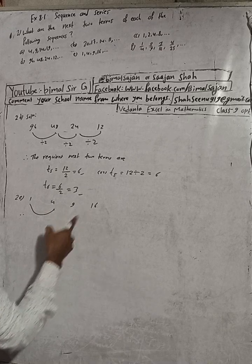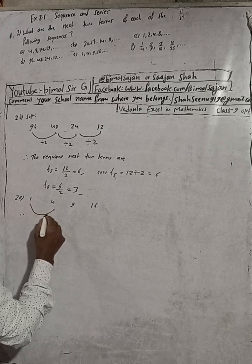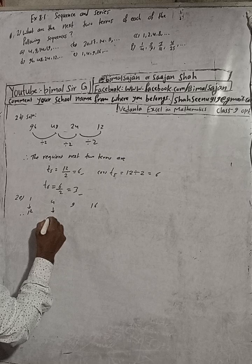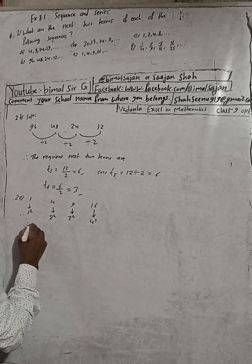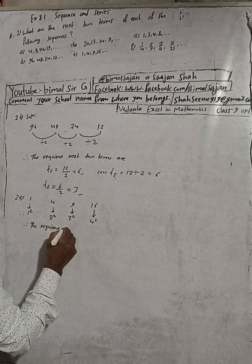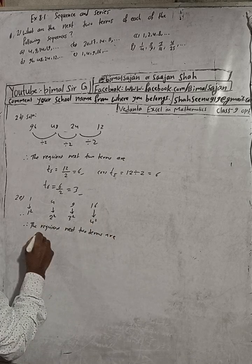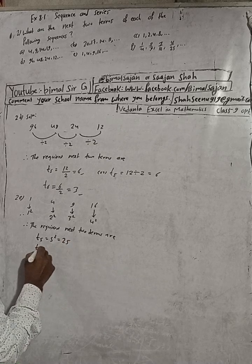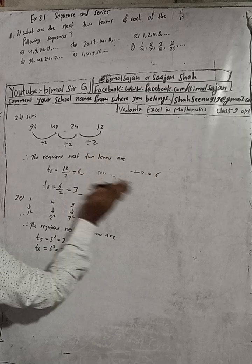Now part (e). The sequence is 1, 4, 9, 16. We can see that these are perfect squares: 1 squared, 2 squared, 3 squared, 4 squared. So the next two terms will be 5 squared and 6 squared. Therefore T5 equals 25 and T6 equals 36. So 25 and 36 are the required answer.